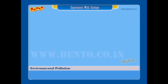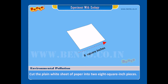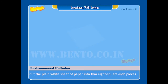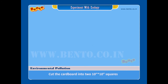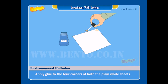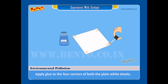Procedure. Step 1: Cut the plain white sheet of paper into two 8 square inch pieces. Step 2: Cut the cardboard into two 10 by 10 inch squares. Step 3: Apply glue to the four corners of both the plain white sheets.